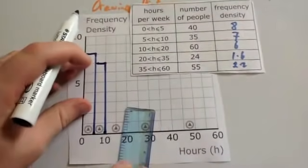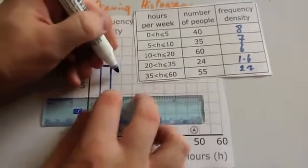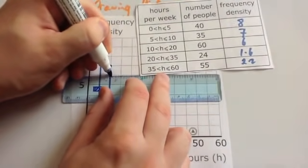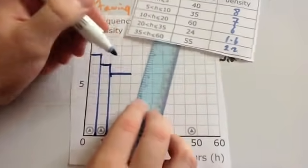Next one, 10 to 20, has a frequency density of 6. So, a frequency density of 6. There's 10 to 20.